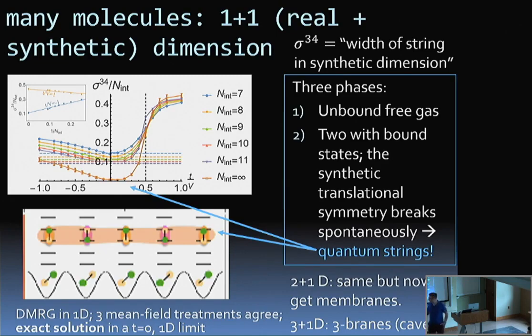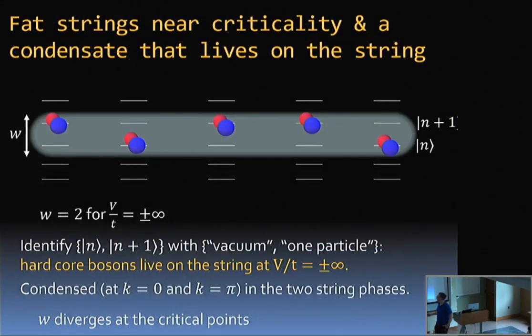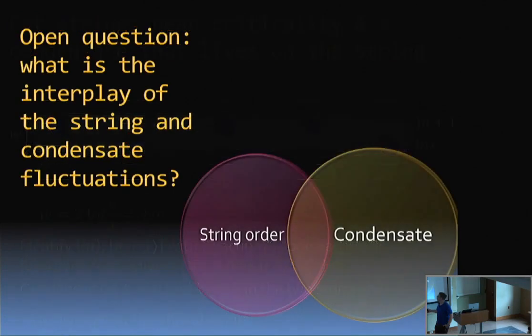We don't understand the nature of this string very well. As you tune parameters, the string will unbind, and you get phase transitions between string phases and unbound phases. I think this is really rich many-body physics. I could give you a whole talk about this, but I just want to throw this out there and say I think this is a new thing for us to explore. It turns out that there are bosons and anti-bosons that live on this string. This was just the simplest thing that you can set up with these synthetic dimensions. We don't know the nature of the quantum phase transition. We don't have an effective field theory for it. These are all things that we're trying to figure out.